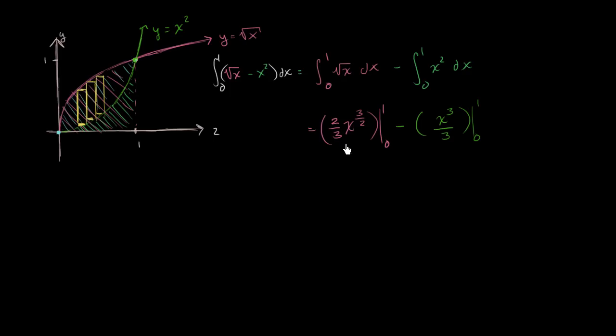Now this first expression, if we evaluate it at 1, 2 thirds times 1 to the 3 halves, that's just going to be 2 thirds. And then from that, we're going to subtract this thing evaluated at 0, which is just 0. So we're just left with 2 thirds.